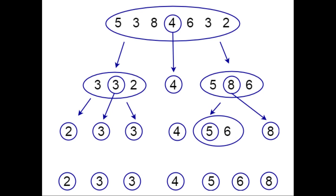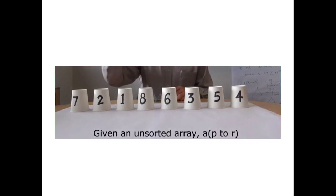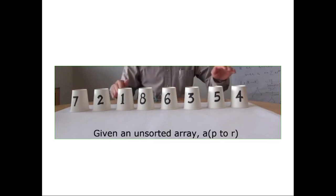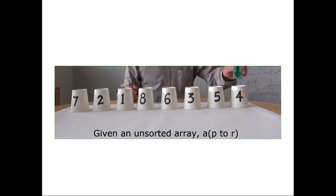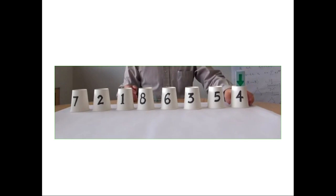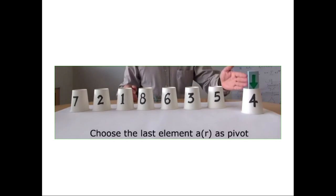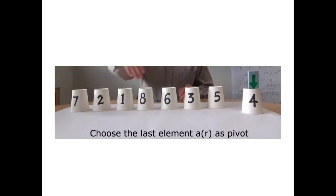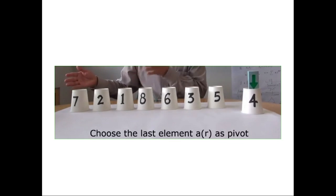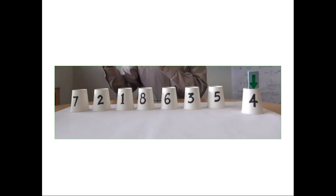This is a recursion process. If you have an unsorted list, we will pick an element — for example, 4. This is a small element. We will take the first element and use it as the pivot.